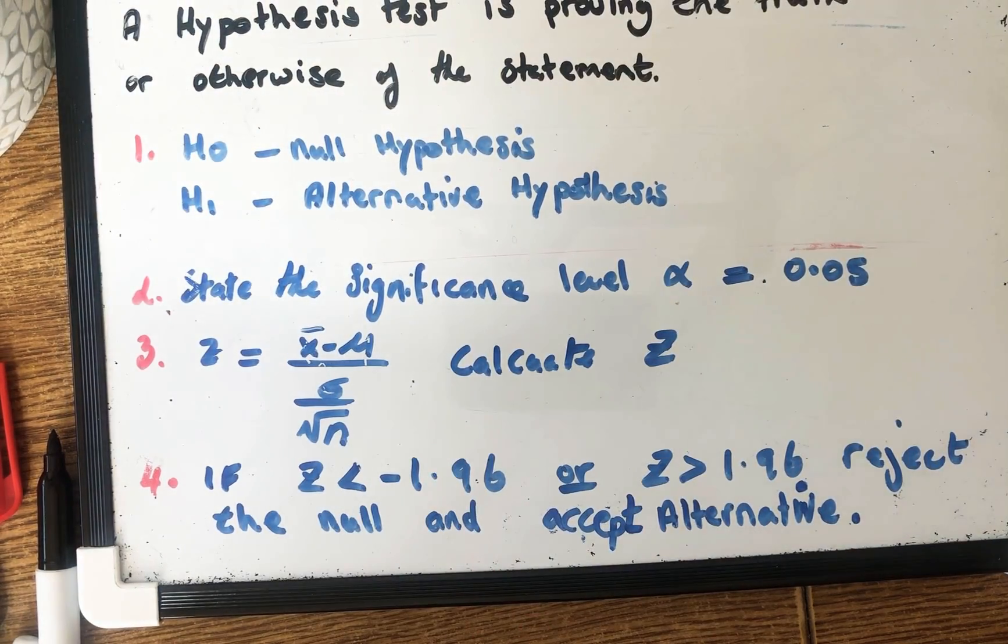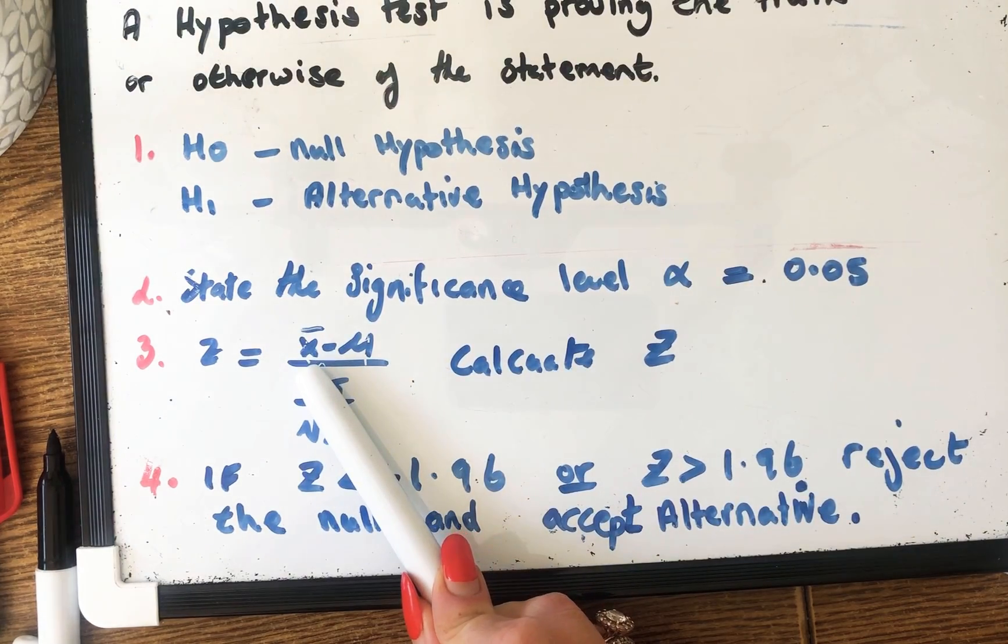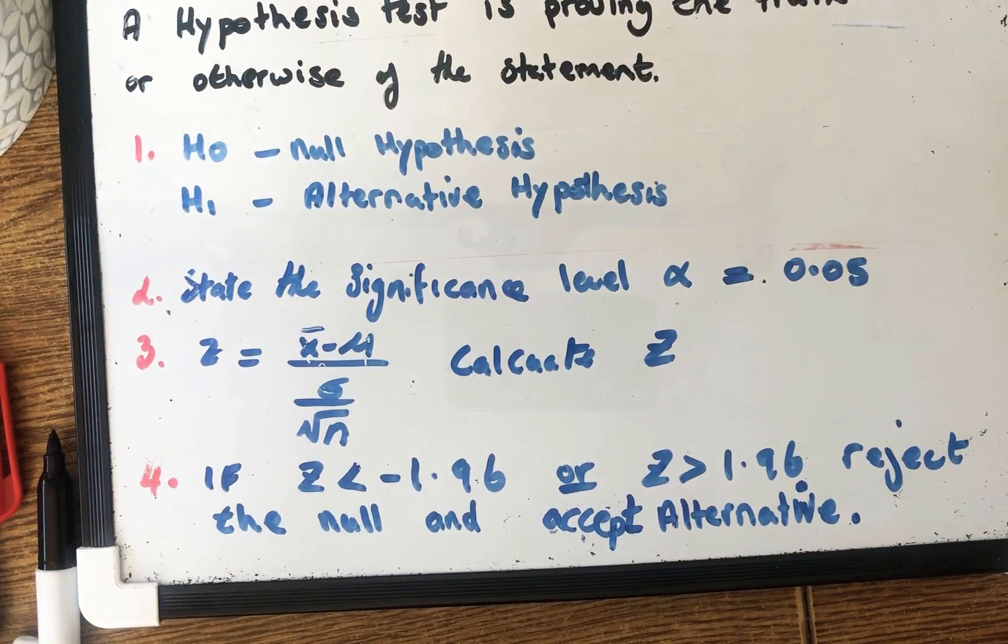But let's say the farmer decides to take maybe 30 of these 100 cows and put them into a different field. Well they may have a different average number of litres of milk they produce and this is your X bar. So the X bar is the sample mean. So this is the cows we took out, the 30 cows.